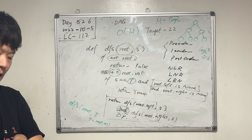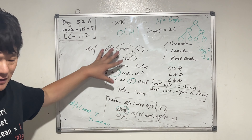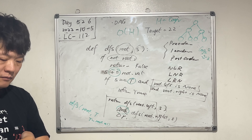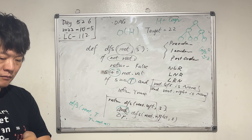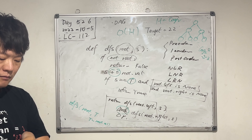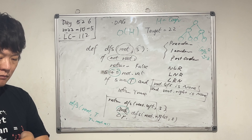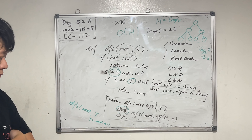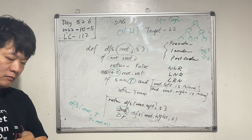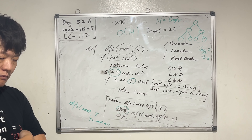What algorithm are we using? Depth-first search. From the root to the leaf you can add or subtract. You just add the numbers as you go along and see if they add up to T, or you subtract the numbers as you go along.